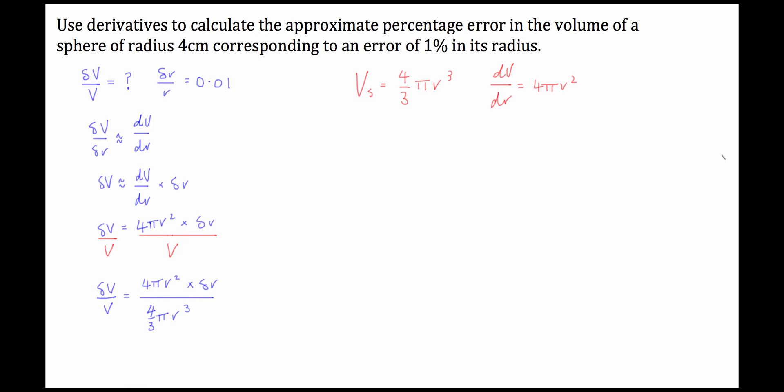Now you can see when we write it like this that we can do quite a few cancellations. The pi's will cancel out. Both r's on the top will cancel out with two of the r's on the bottom, and what we'll be left with is 4 divided by 4 over 3 r times by this delta r value.